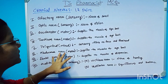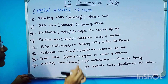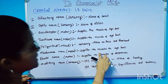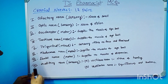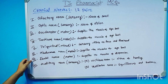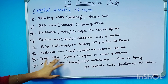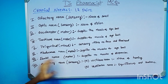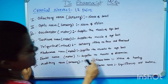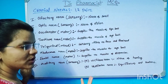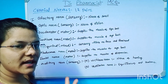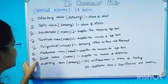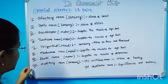The sixth cranial nerve is the abducens nerve. It is a motor type and supplies the muscles of the eyeball, same as the oculomotor nerve. The seventh cranial nerve is the facial nerve.